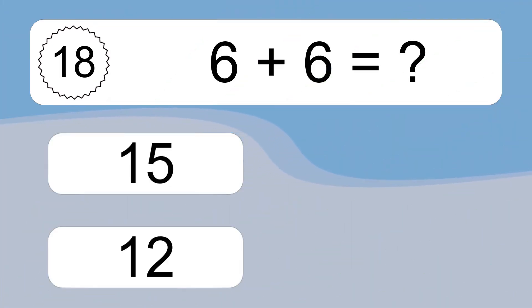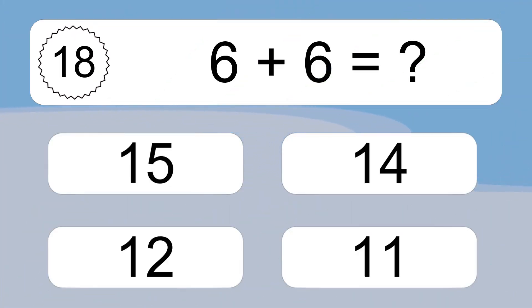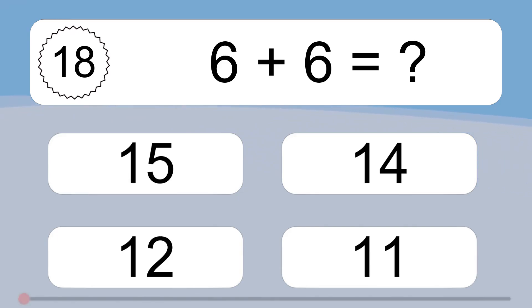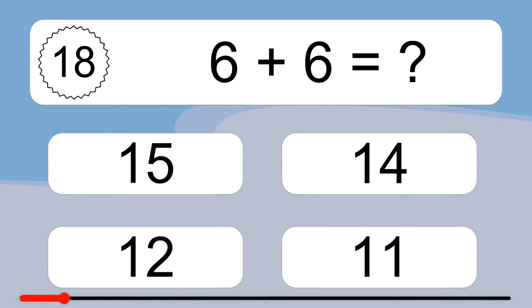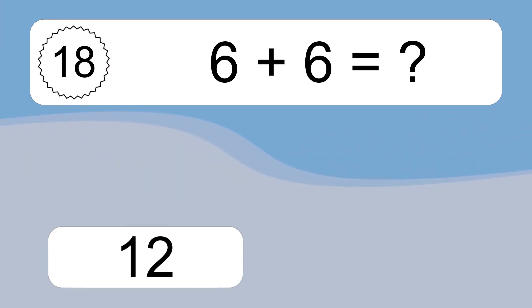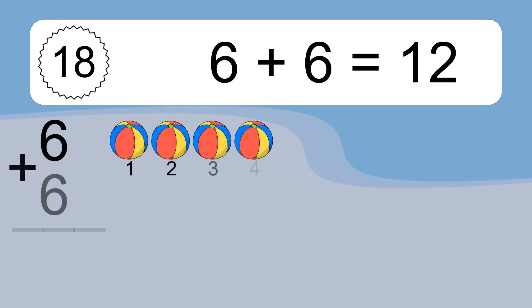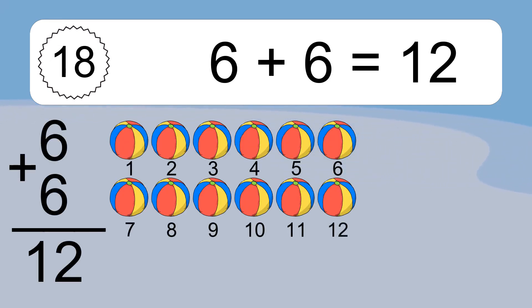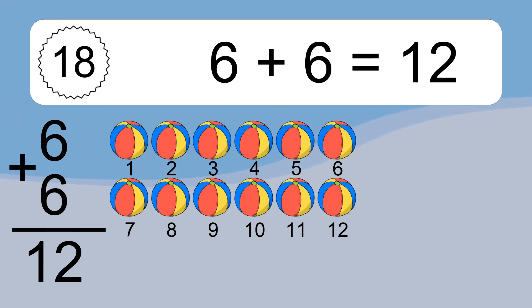Six plus six equals what? Six plus six equals twelve. Let's count it: one, two, three, four, five, six, seven, eight, nine, ten, eleven, twelve.